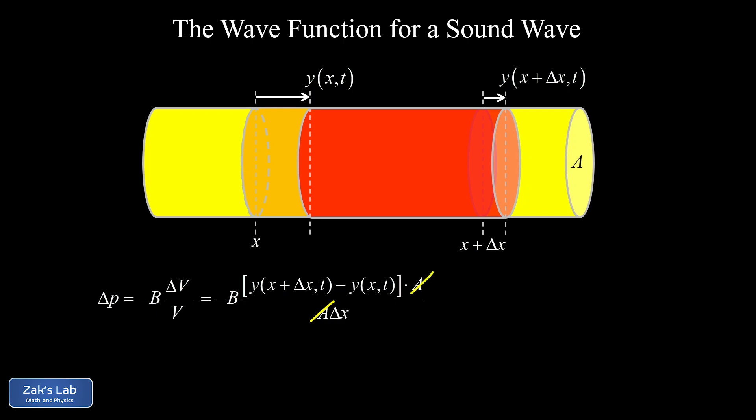After the areas cancel, inside the fraction we see something familiar: a function evaluated at x + Δx minus the function evaluated at x, all divided by Δx. Taking the limit as Δx becomes arbitrarily small, that is an x-derivative — specifically the partial derivative of the wave function with respect to x. The delta p is the pressure on the compressed thin slice of air minus the original atmospheric pressure, so we work in gauge pressure, counting atmospheric pressure as zero. Thus p(x, t) = −B × ∂y/∂x.